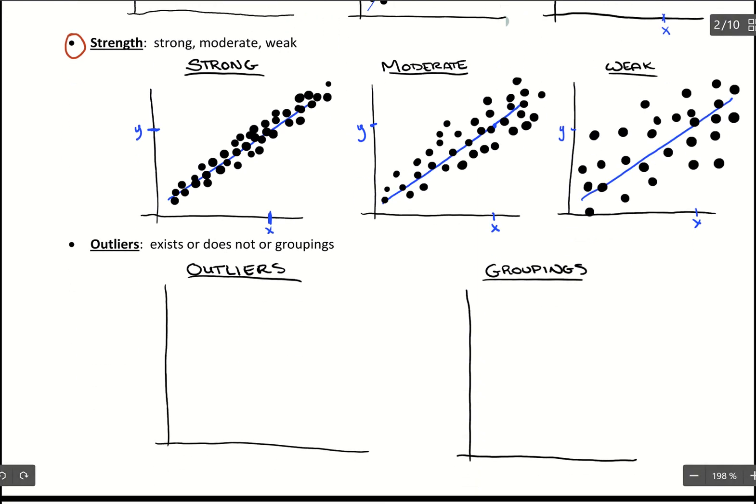Then our last piece is outliers and groupings and seeing that within our data. So with outliers, what they'll come through as is we'll see a scatterplot with a clear trend to it, so something like that.